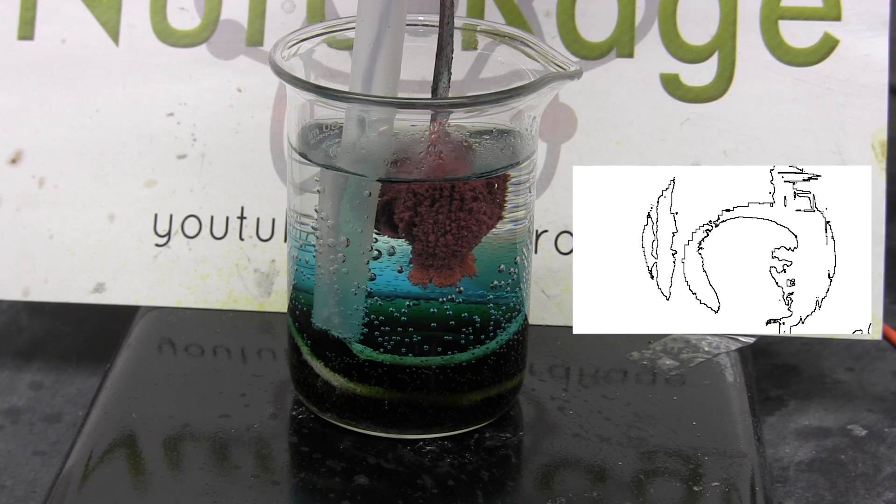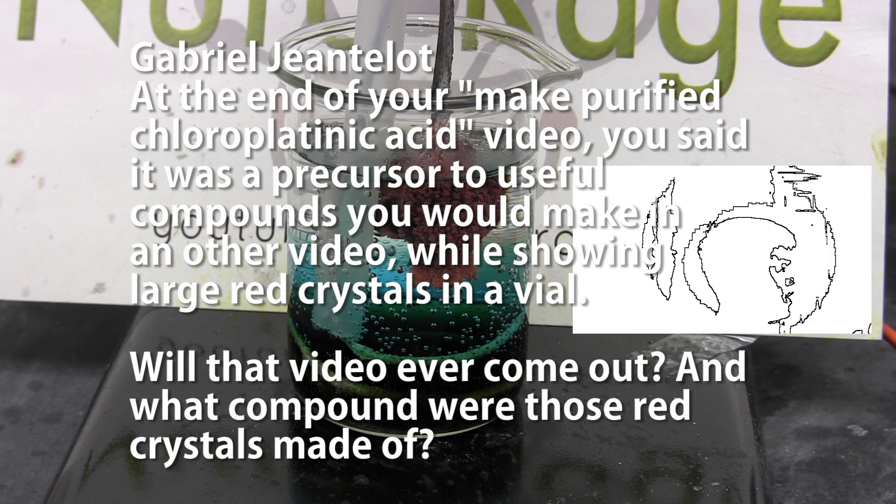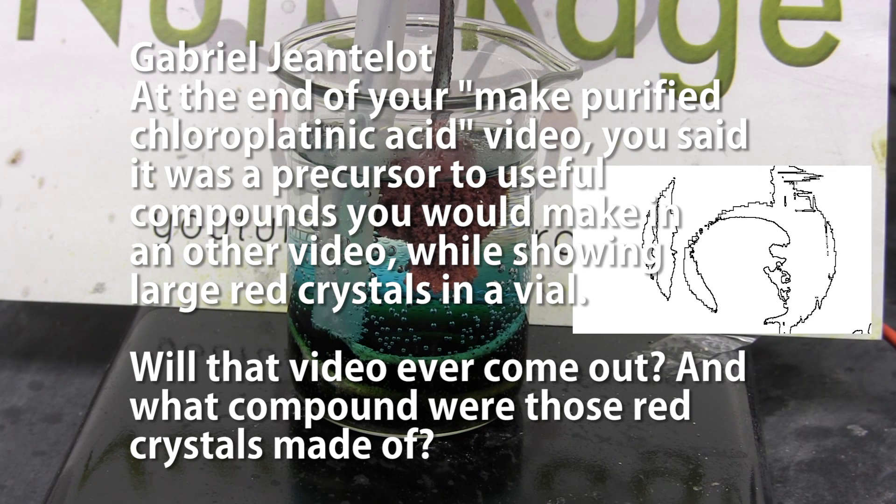Okay, moving on to next question, Gabriel Gentiliel asks, at the end of your make purified chloroplatinic acid video you said it's a precursor to useful compounds you're making on our video, while showing large red crystals in a vial. What did I come out and what was the compound?